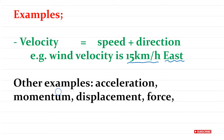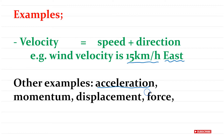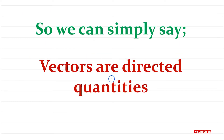Other examples of vectors are acceleration — simply because velocity is involved — momentum, again because velocity is in there, displacement — where we're talking about distance in a certain direction — and force, which has direction. So we can simply say vectors are directed quantities.